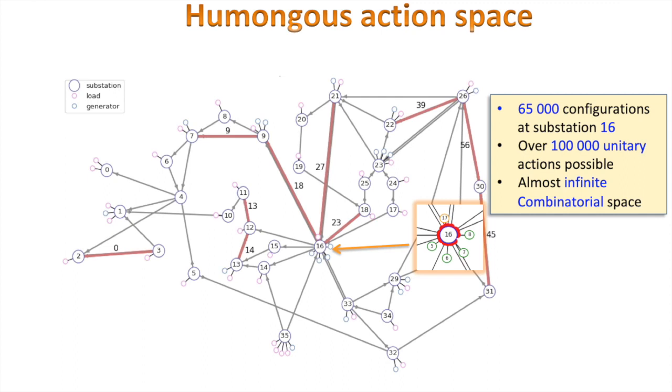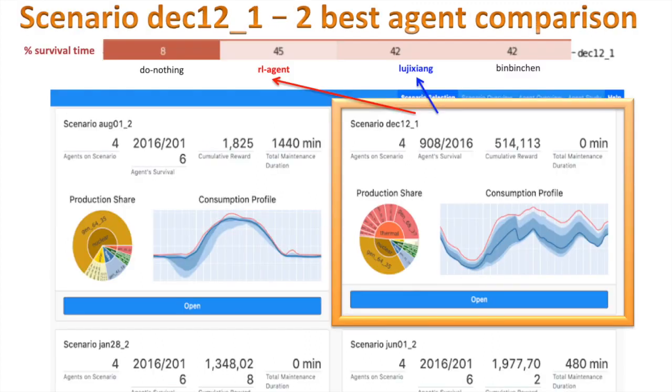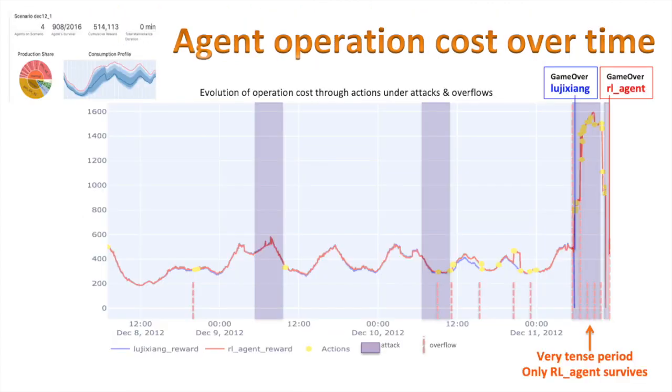Let's pick up our December scenario number one and compare the two best agents through it. When we open the scenario, we can see how the cost of operation changes over time for each agent. At first it's very similar, and later some differences appear as they're doing different actions. We can see time of actions with the yellow markers. We can also see period of attacks in purple and times of overflow with vertical dashed red lines. It gets very intense after three days and a new probably strong attack. Luke's agent immediately runs into a blackout and a game over. Herald agent survives for a few hours in this attack, while its cost of operation rose significantly. It eventually fails over an attack.